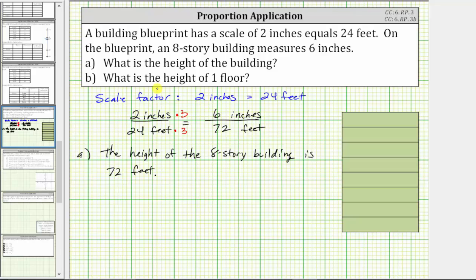For part B, we're asked what is the height of one floor? We know the height of the eight story building is 72 feet, and therefore to determine the height of one floor, we need to divide the 72 feet by eight. Well, 72 divided by eight is equal to nine, which means the height of one floor is nine feet.